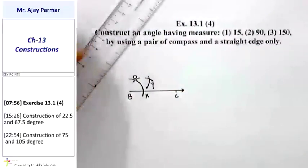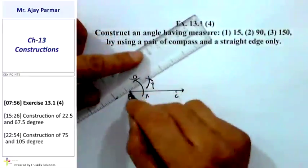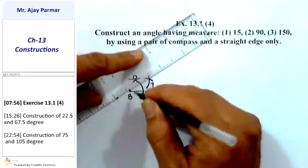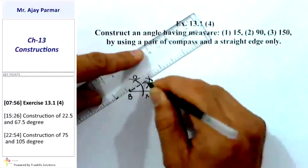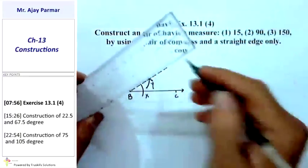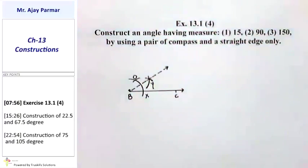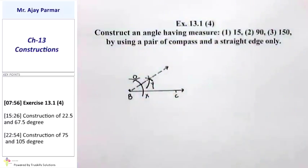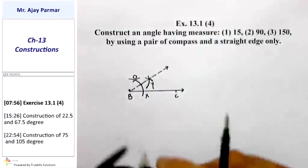Now I am going to draw a dotted ray BY, but that ray BY is not the required ray because we need to draw a ray of 15°. That dotted ray is of 30° — exactly half of 60°. What I did was construct the bisector of 60°, giving us 30°. Now I am going to construct the bisector of 30°, which will give us 15°.